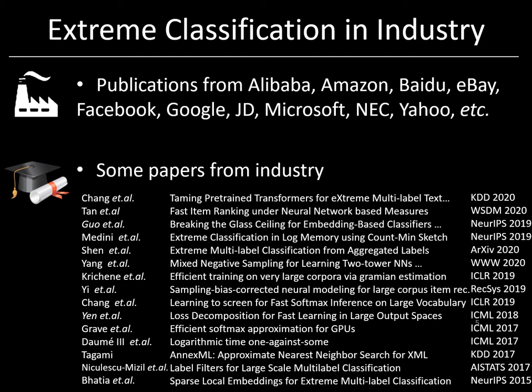Extreme classification also seems to be thriving in industry, and that's because it's opened a new paradigm for tackling key industrial applications such as extremely large-scale ranking and recommendation in web search, computational advertising, retail product recommendation and so on. And because of this, many very nice papers have come out not only from established companies but also from startups.